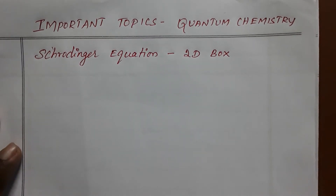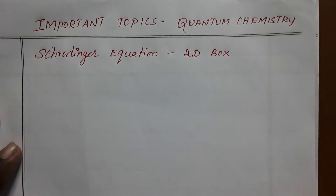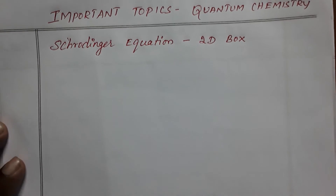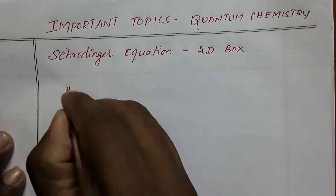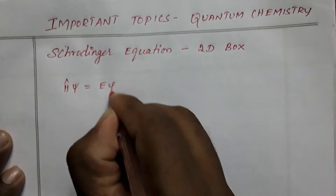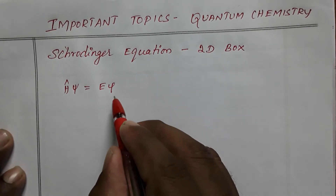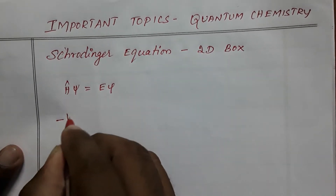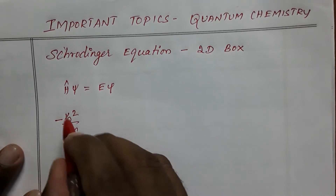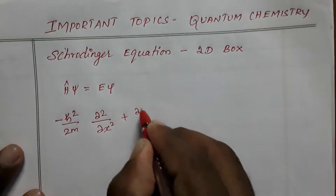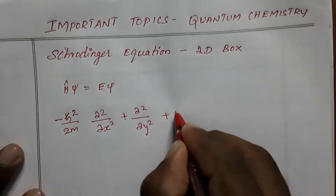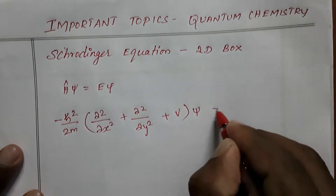In the two-dimensional box, the particle is moving in two directions — x and y. Taking a rectangle as an example, it has two different lengths and can move in two directions. From the time-independent Schrödinger wave equation, H-cap ψ = Eψ, the Hamiltonian gives: −(ħ²/2m)(∂²/∂x² + ∂²/∂y²)ψ + Vψ = Eψ.